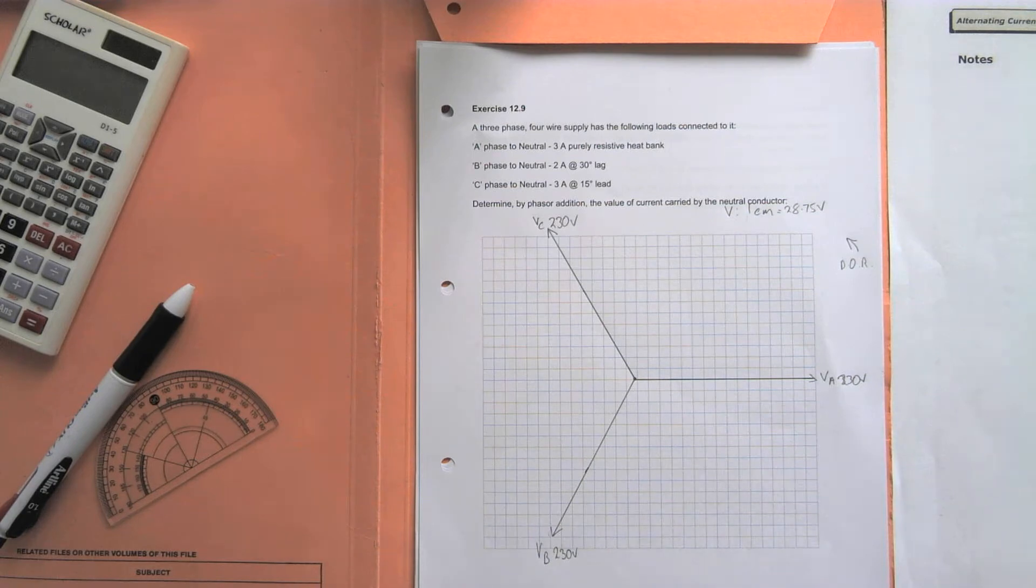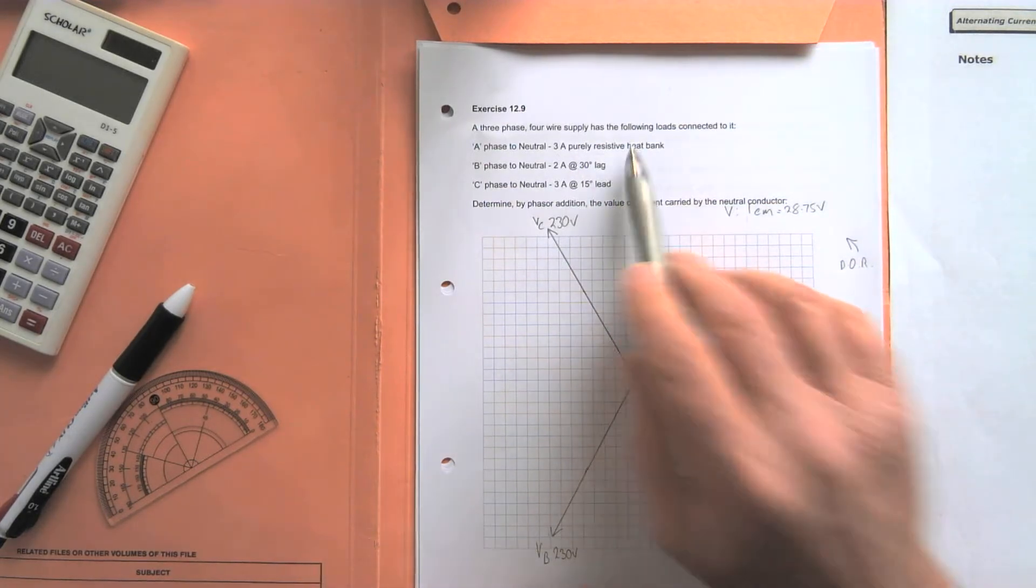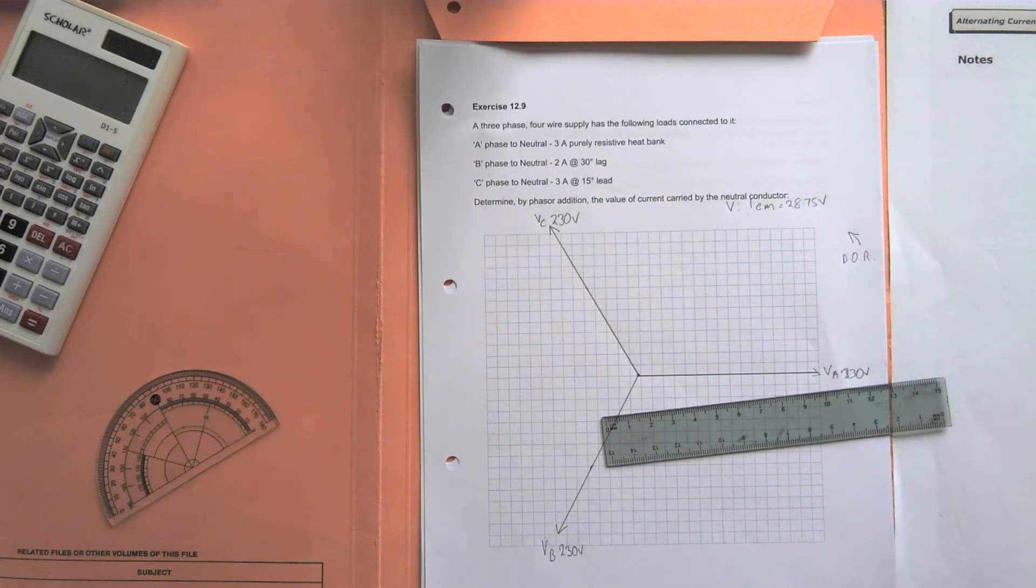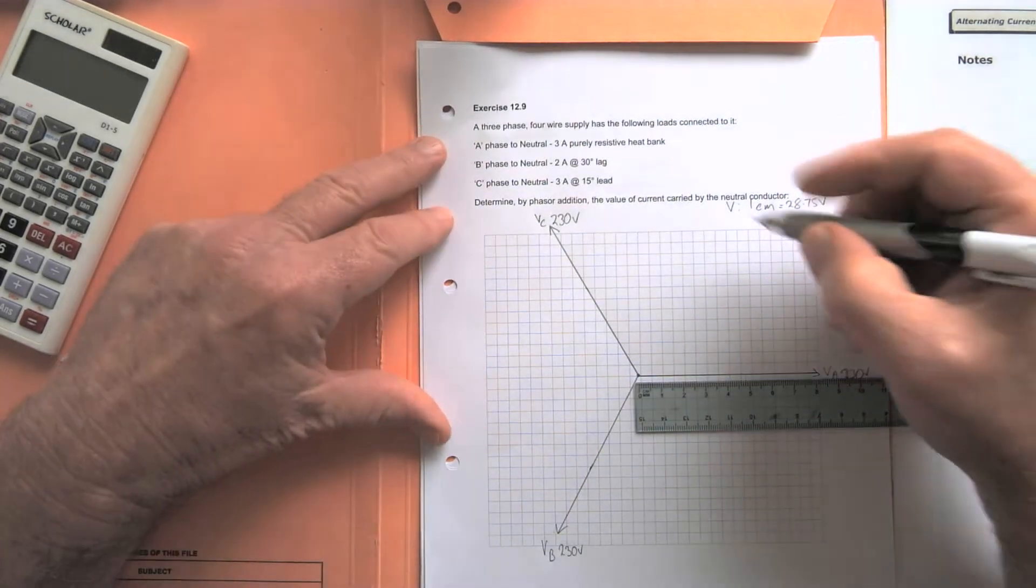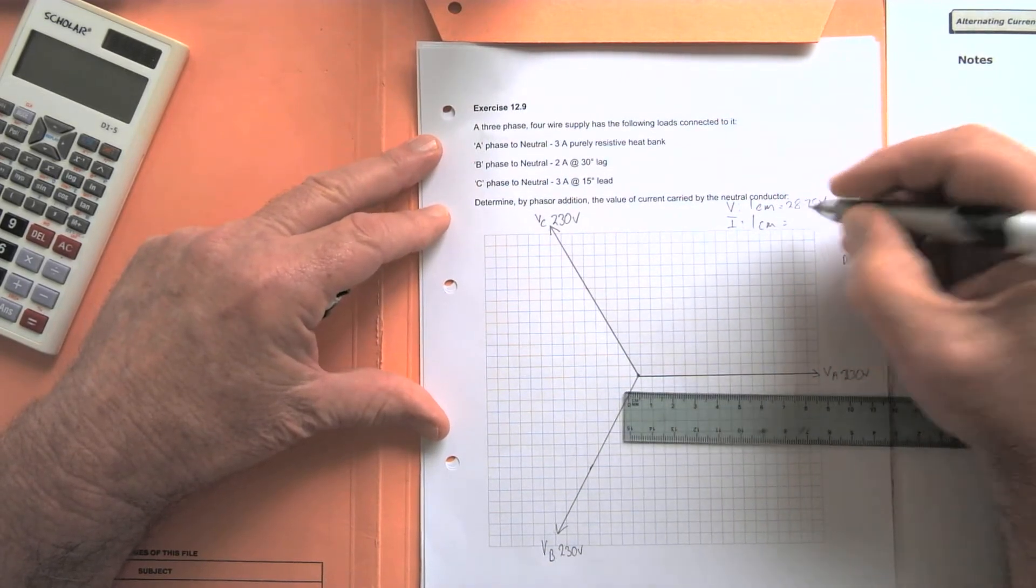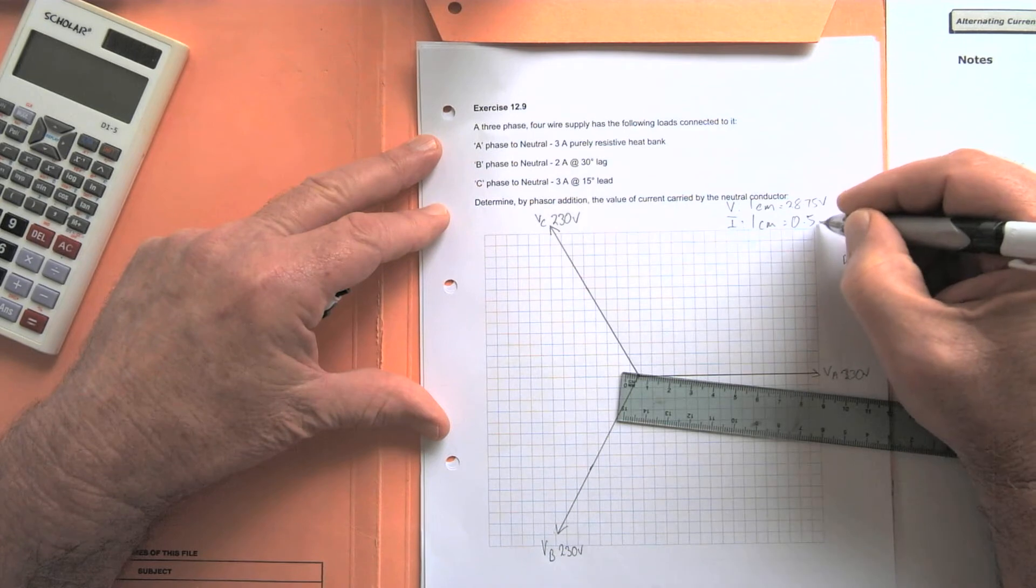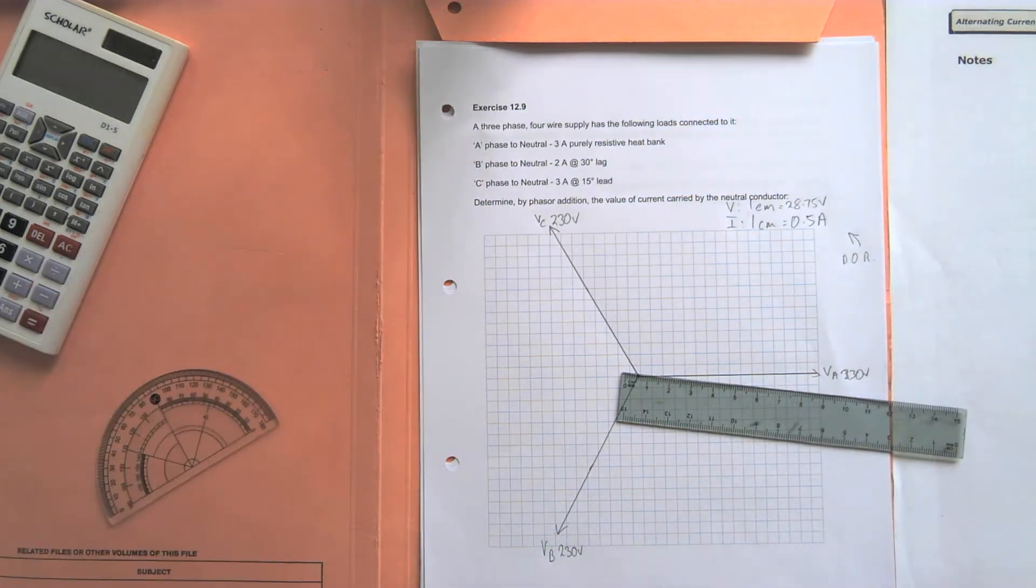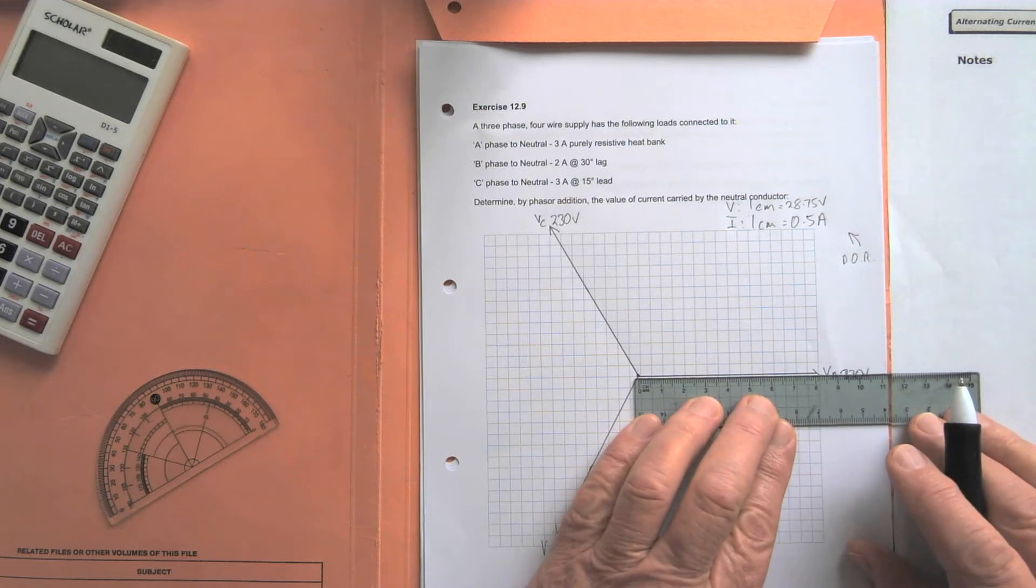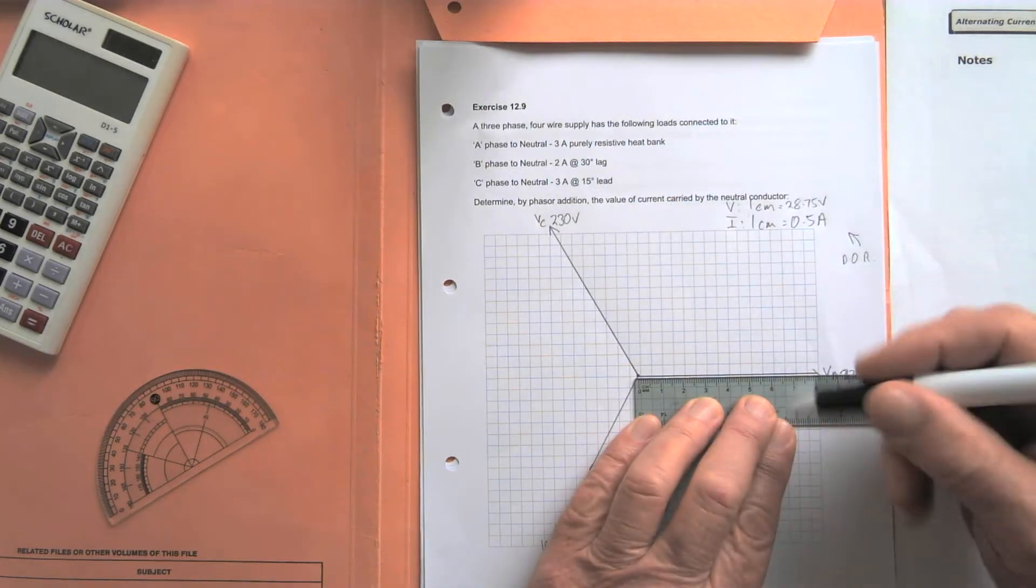So we'll plot our currents onto the phasor now. We've got three amps purely resistive, so that'll be in phase. A little current scale for the current: I'll go one centimeter is equal to half an amp, so it can come over there, six amps - oh sorry, six centimeters to represent three amps.